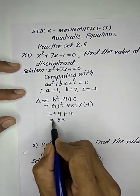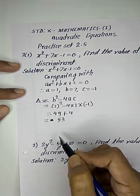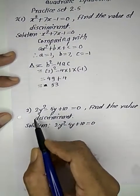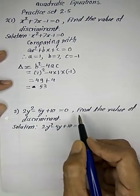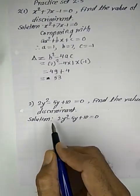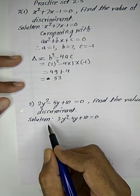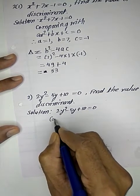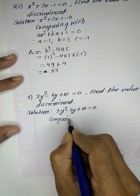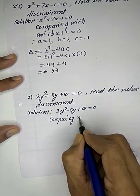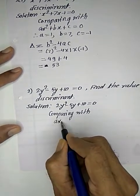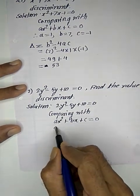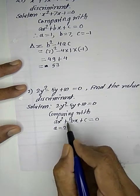Now the second example: 2y² - 5y + 10 = 0. Find the value of discriminant. Each example is similar - we use the discriminant formula. Comparing with ax² + bx + c = 0, the value of a is 2.